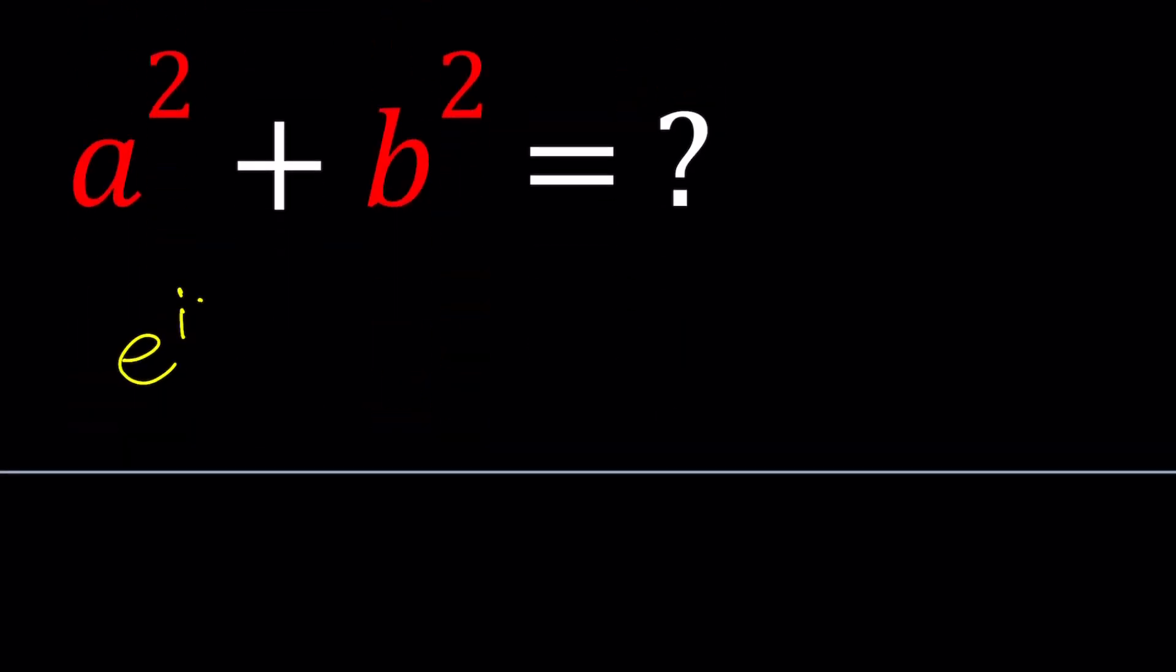e to the i theta equals cosine theta plus i times sine theta. And this is just amazing because it kind of builds a bridge between imaginary numbers, trigonometry, integers, so on and so forth. So many things. Amazing, mind-blowing.